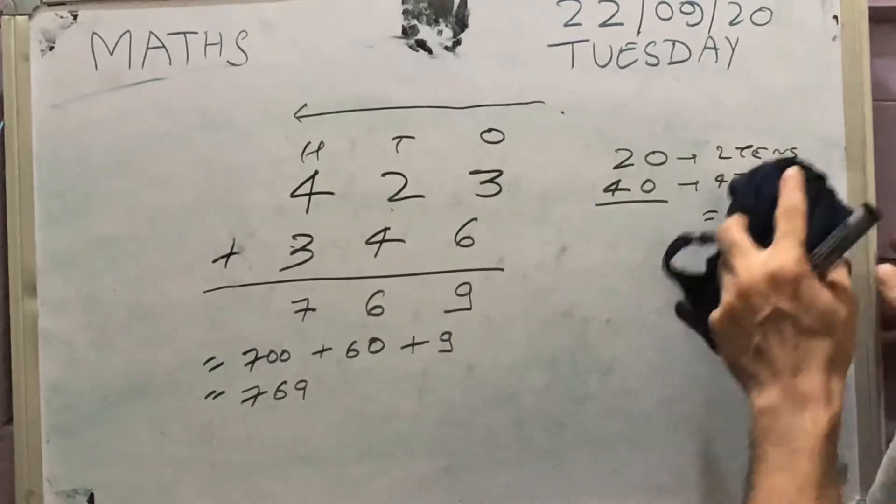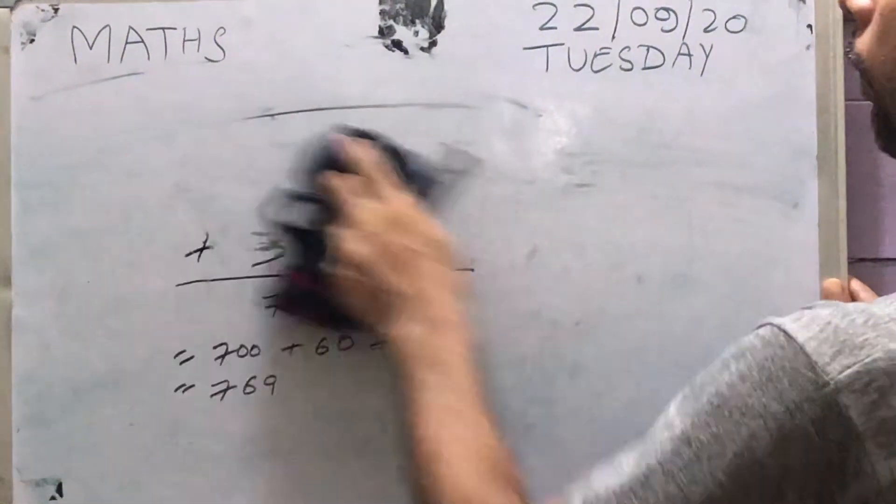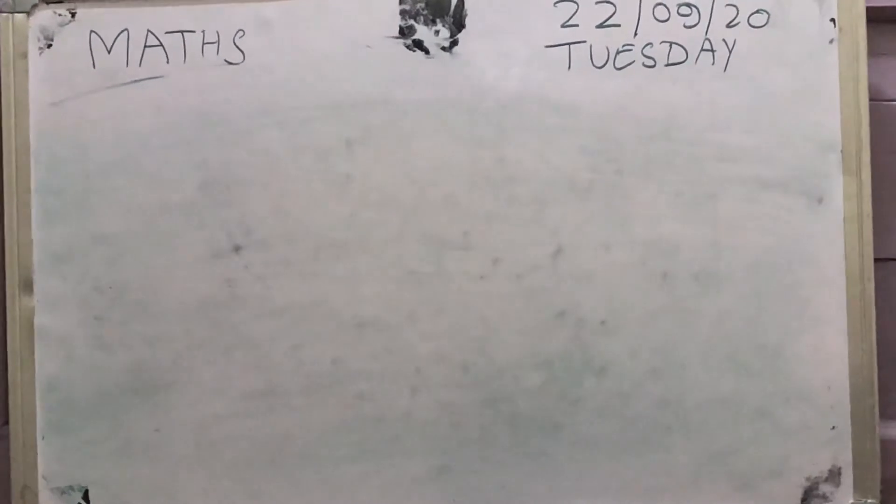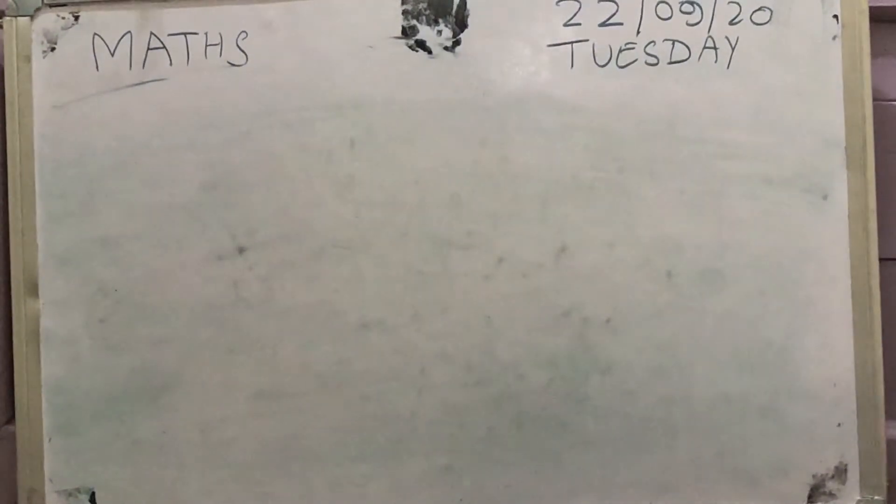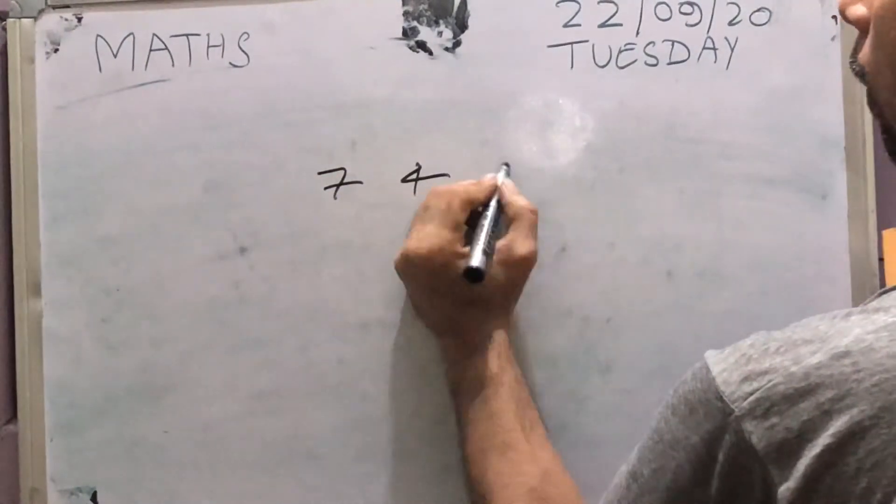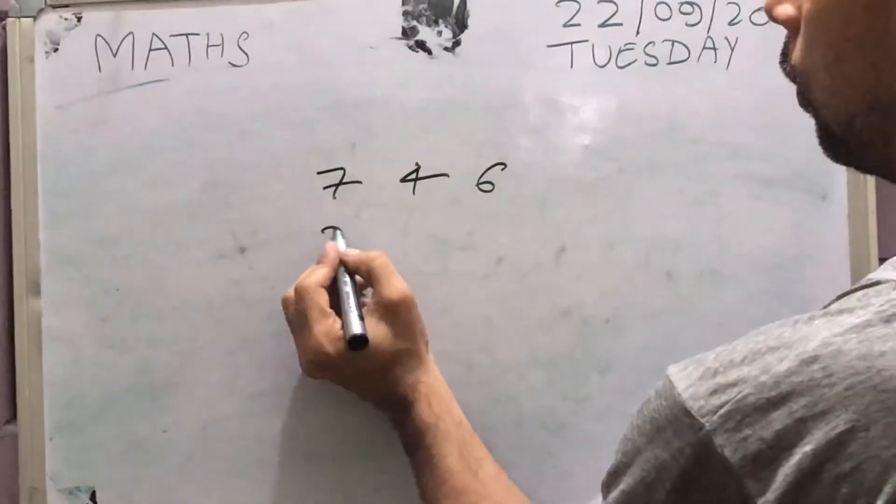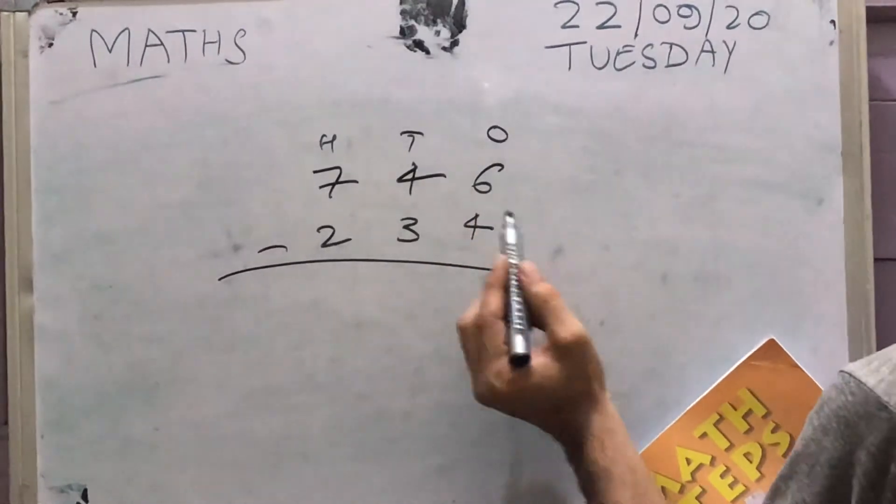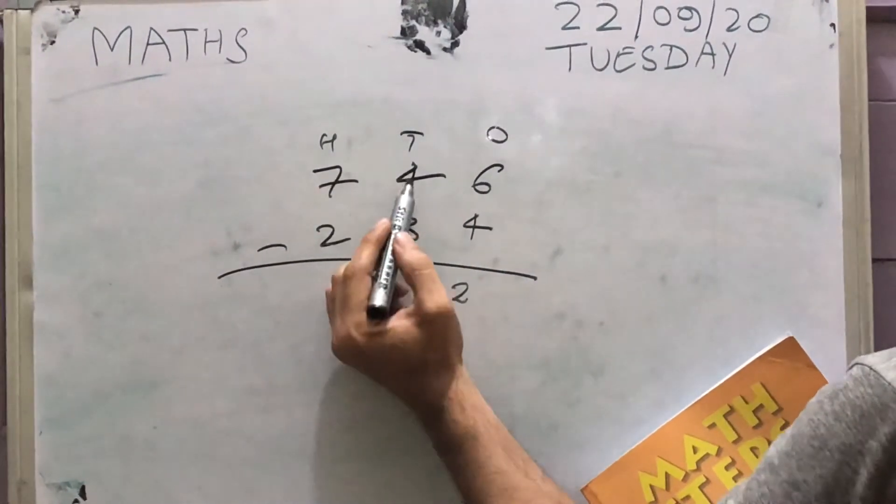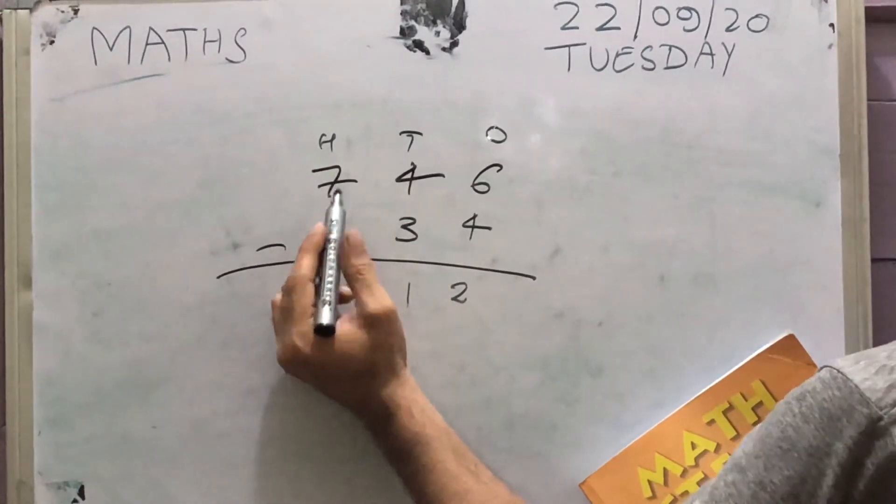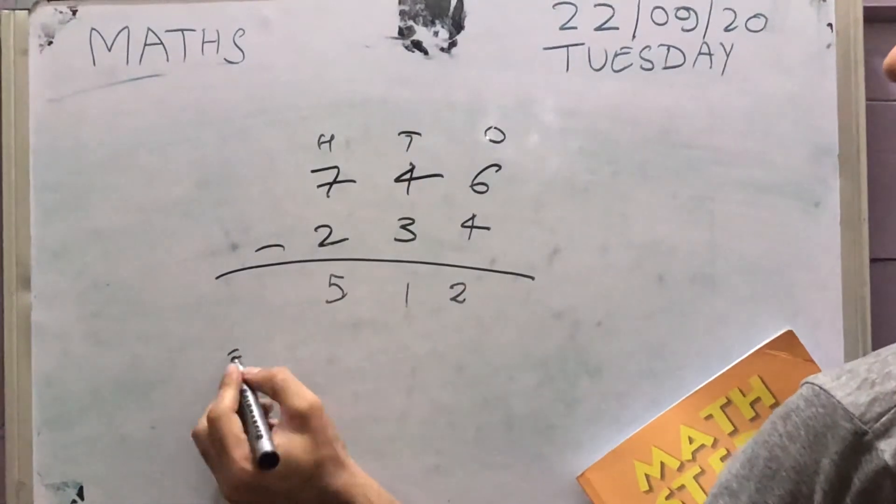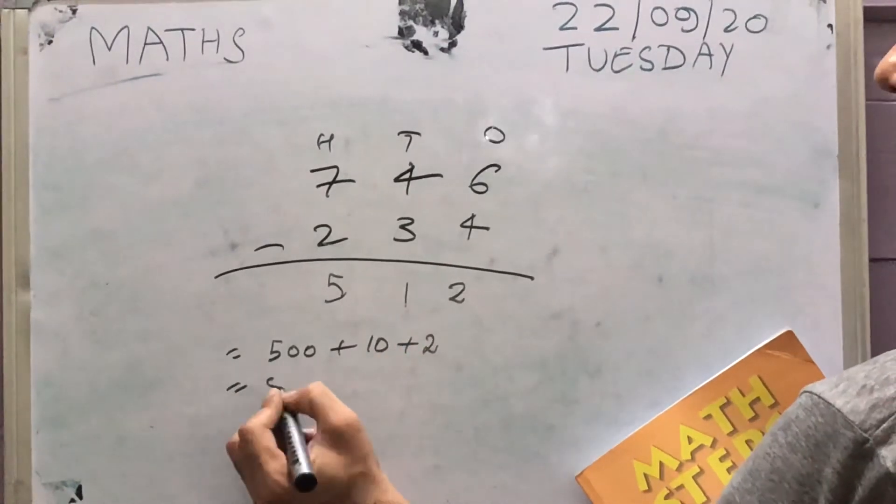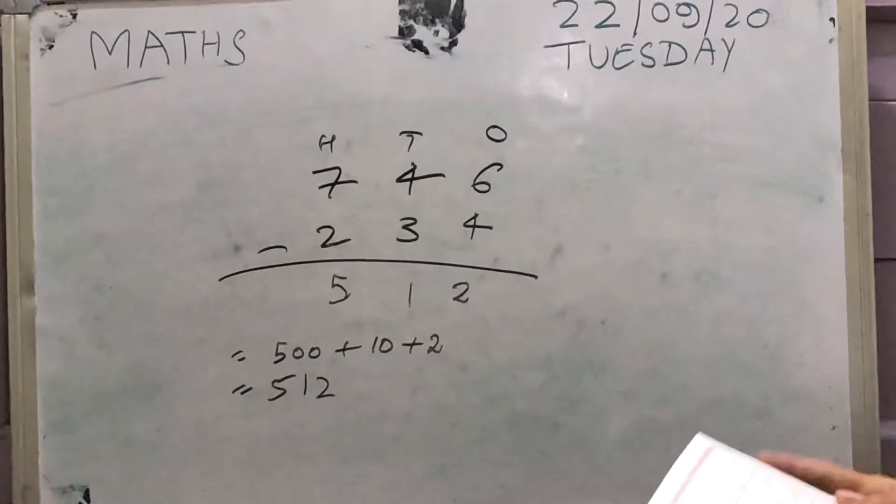Now similarly to addition we do subtraction. It's the same logic that we do. So let's take an example. We take the same number 746 minus 234. This is ones, this is tens and this is hundreds. You have to subtract. Now 6 ones minus 4 ones, 2 ones. 4 tens minus 3 tens, 1 ten. 7 hundreds minus 2 hundreds, 5 hundred. So this is going to be 5 hundreds which is 500. You have 1 ten which is 10, and 2 ones which is 2. And the answer is 512. So you do the subtraction. So it's very simple.